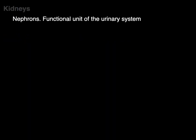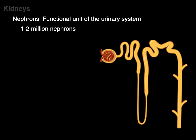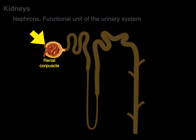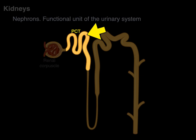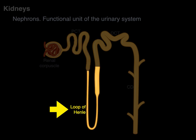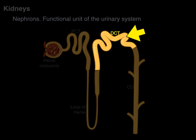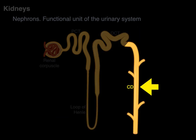Now the renal cortex and medulla. First, let's talk about nephrons — the functional unit of the urinary system. There are about one to two million nephrons in each kidney. A nephron consists of the renal corpuscle (the glomerulus and Bowman's capsule), the proximal convoluted tubule where much reabsorption and secretion takes place, the loop of Henle, the distal convoluted tubule, and the collecting ducts, which collect filtrate from multiple nephrons and excrete urine.